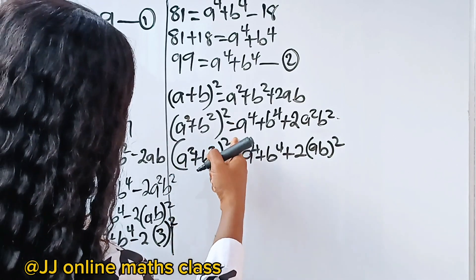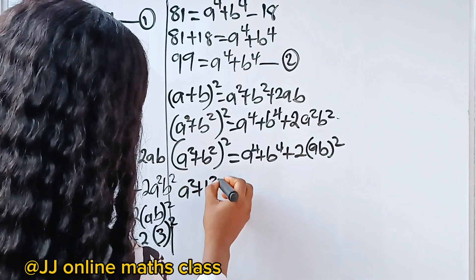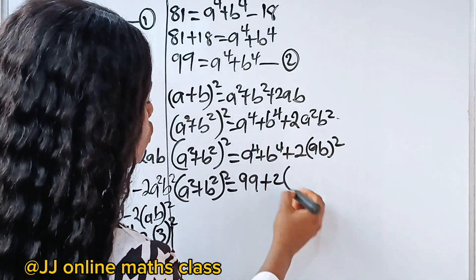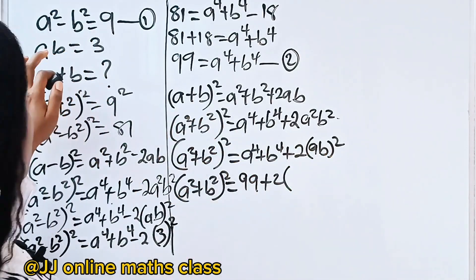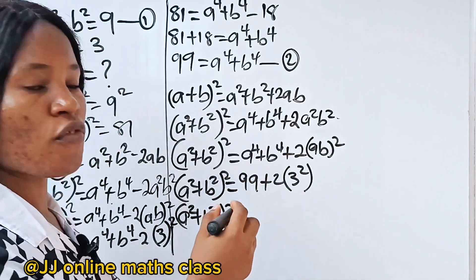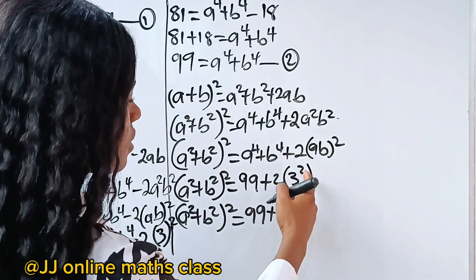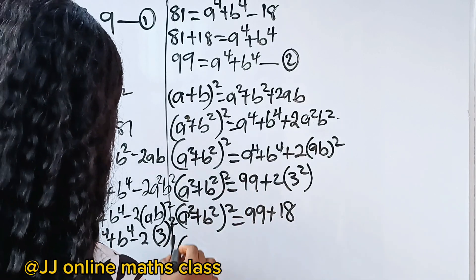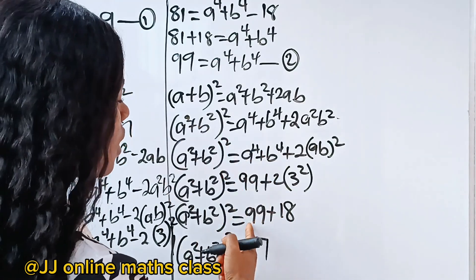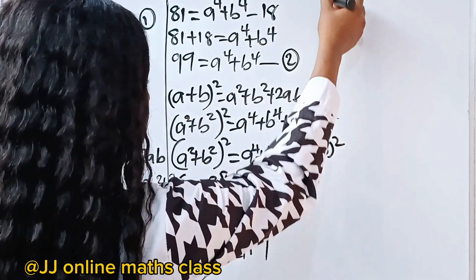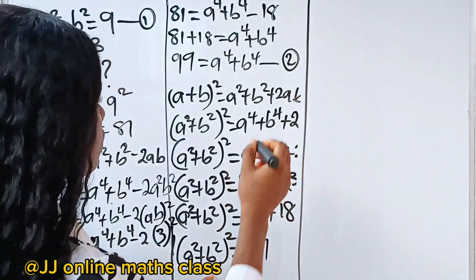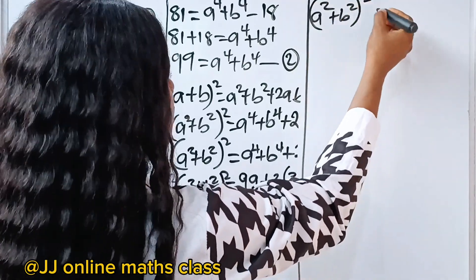So we have (a squared plus b squared) all squared is equal to a to the power of 4 plus b to the power of 4 — which is 99 — plus 2 times (ab) squared. Our ab is 3, so 3 squared is 9, and 2 times 9 gives us 18. So if we solve, we have (a squared plus b squared) squared is equal to 99 plus 18, which gives us 117. So (a squared plus b squared) squared is equal to 117.